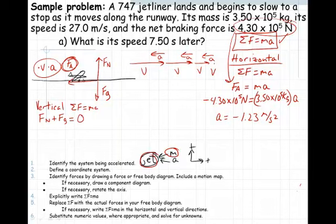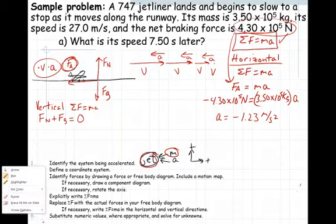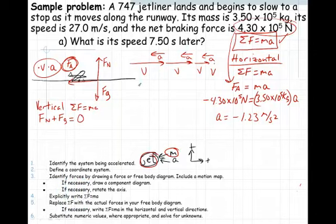But we want to find out what the speed is 7.50 seconds later. So it's important now that we go about using our strategy. We're going to write out x, v initial, v, a, and t. We've already said that the acceleration is negative 1.23 meters per second squared. It wants to know what the speed is at a time of 7.50 seconds later, and we know the initial velocity is 27 meters per second.